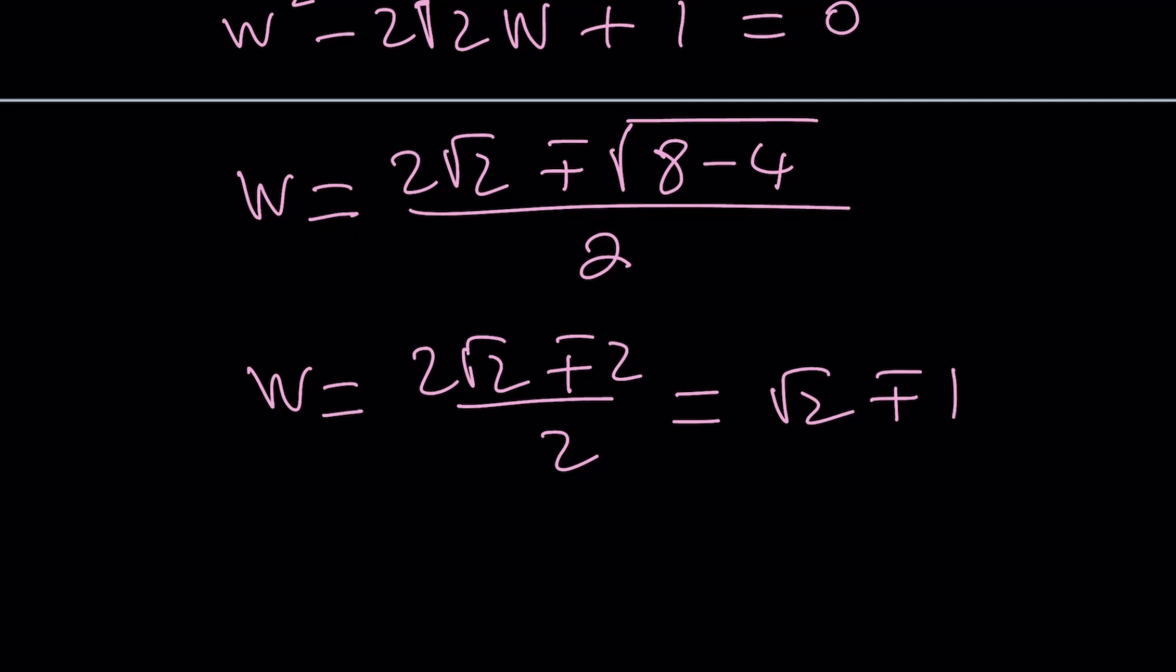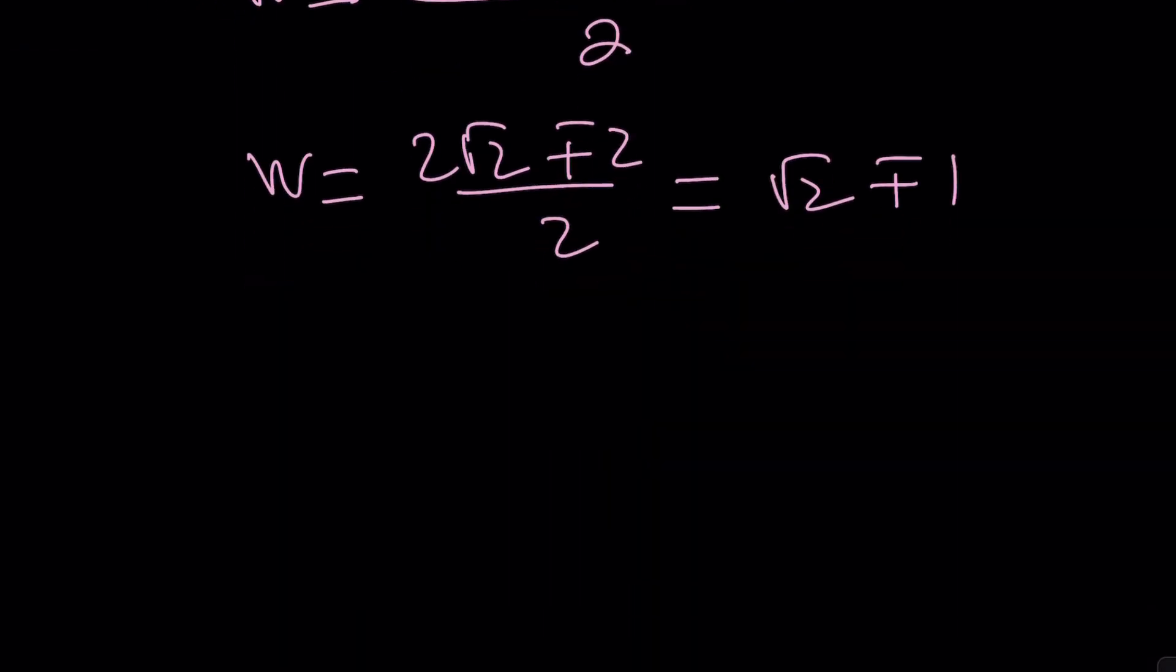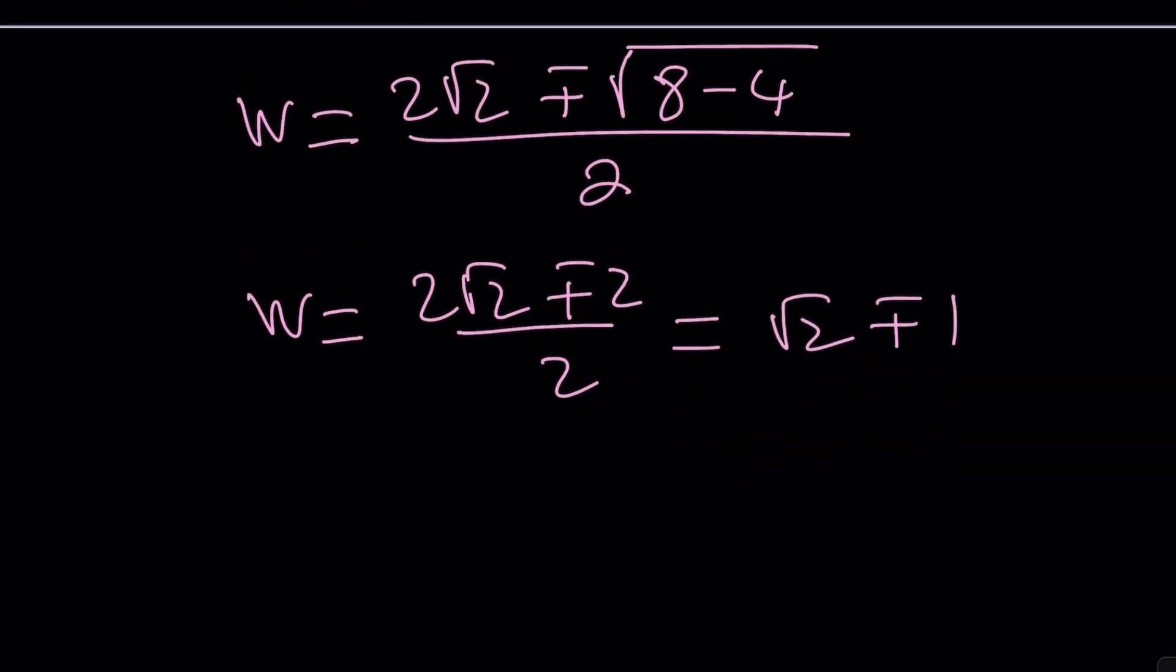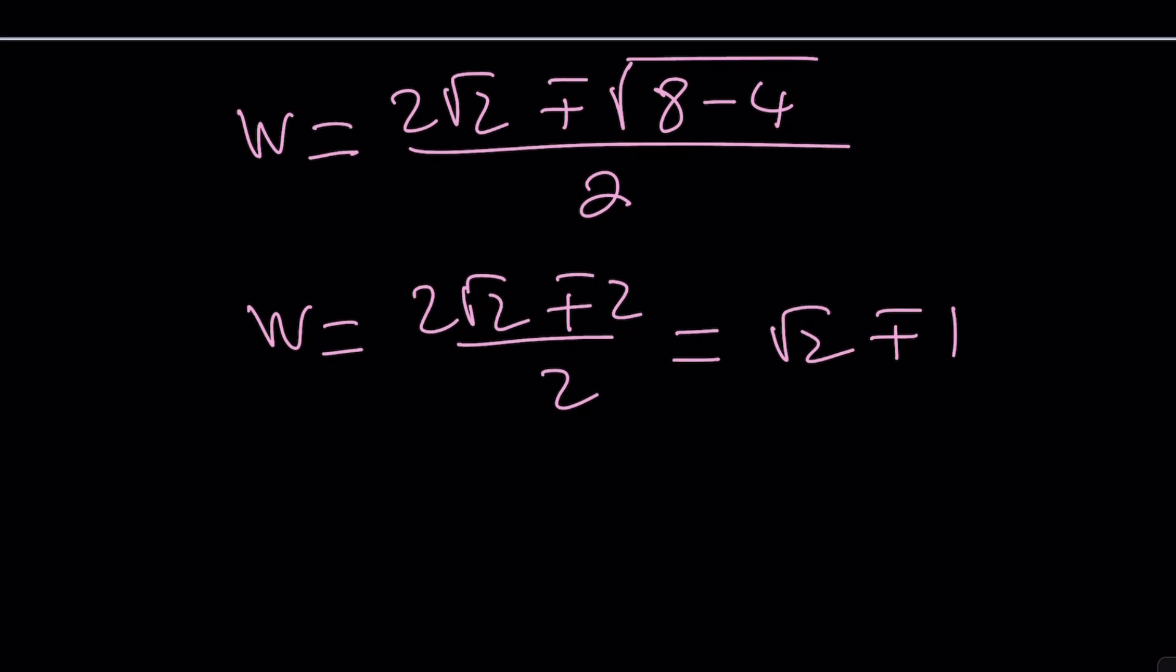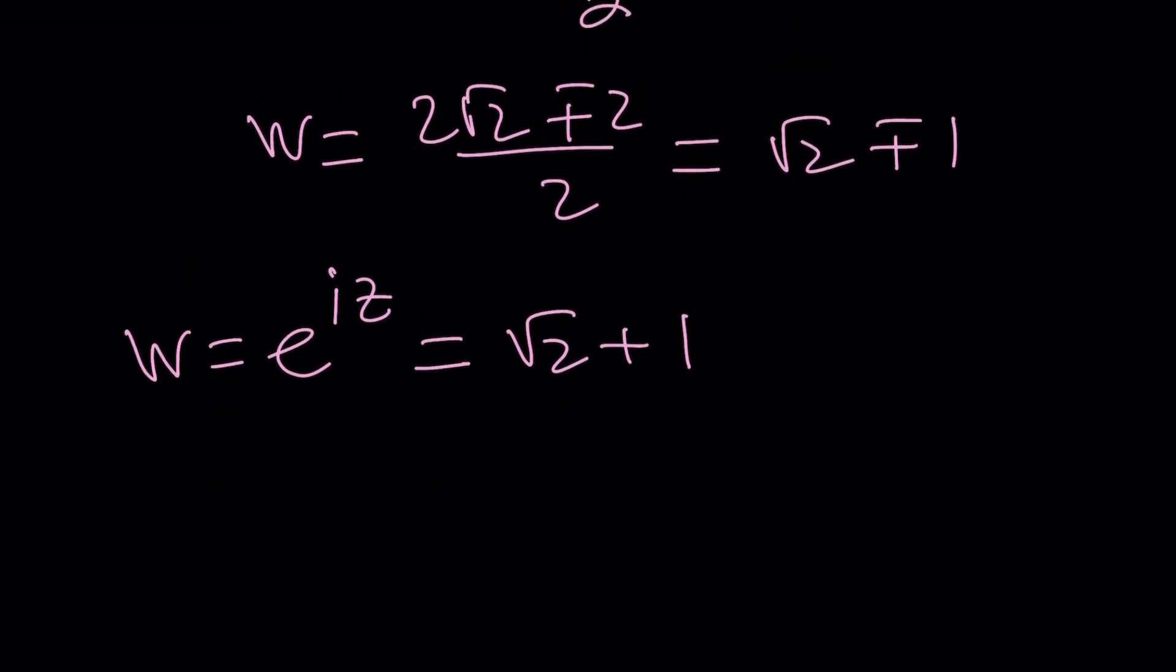Interesting, right? Well, W is not the end goal because W is just e to the power iz, which makes z sort of complex, right? Let's see what happens. So we're going to set W equal to e to the iz. And if I just go off with one of the values, let's just stick to root 2 plus 1.